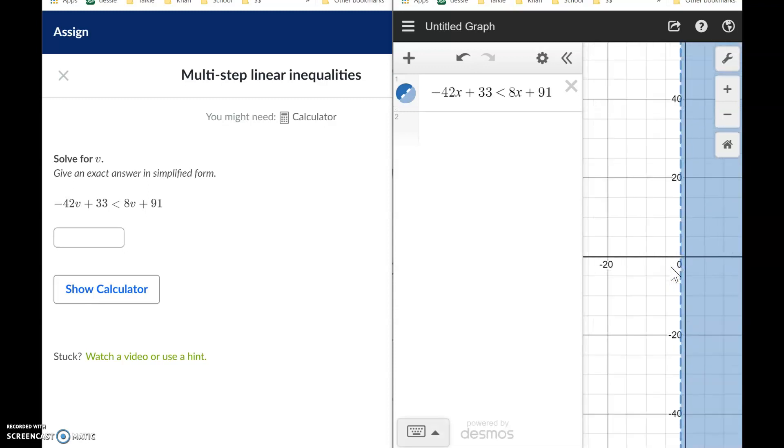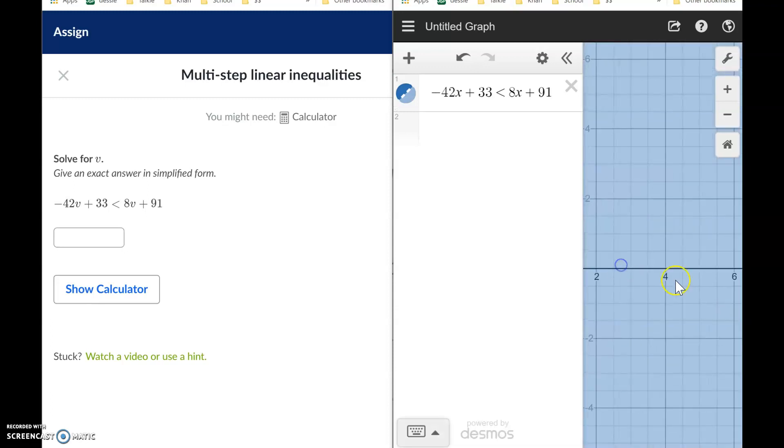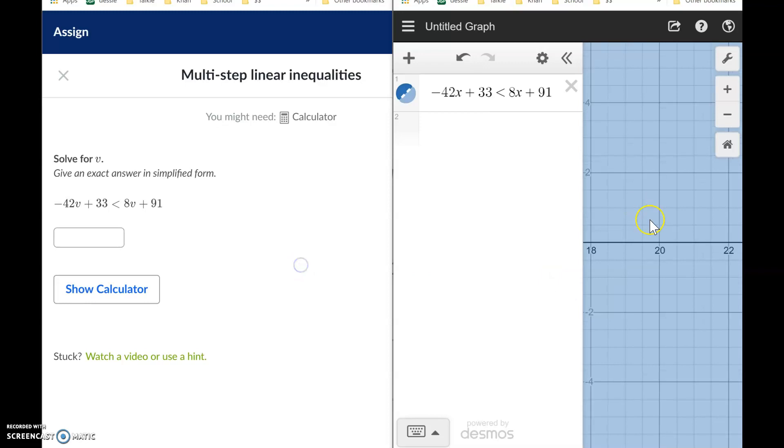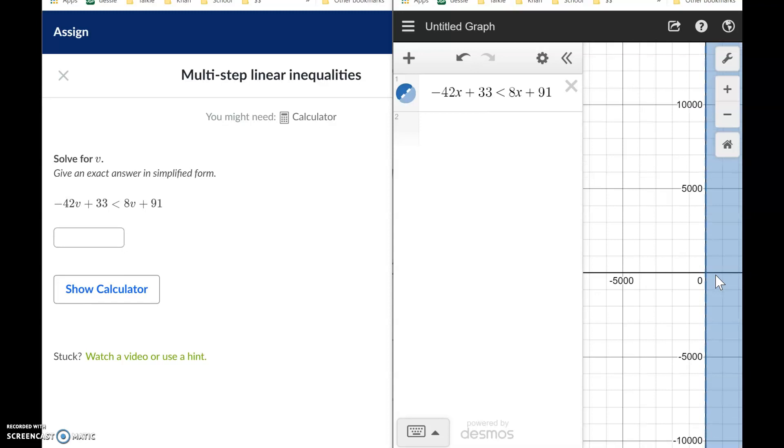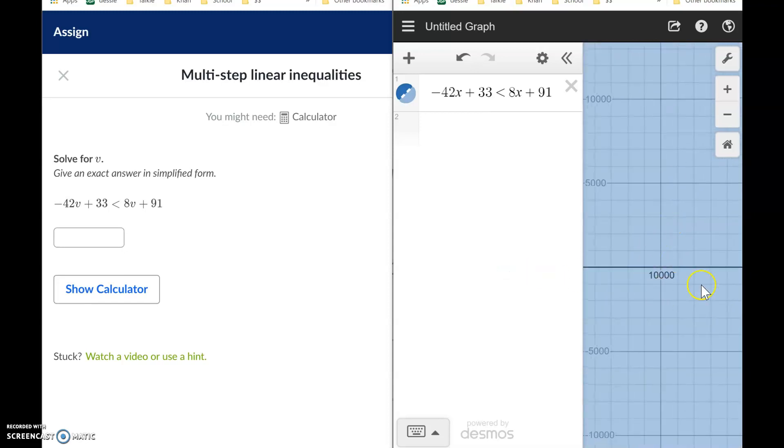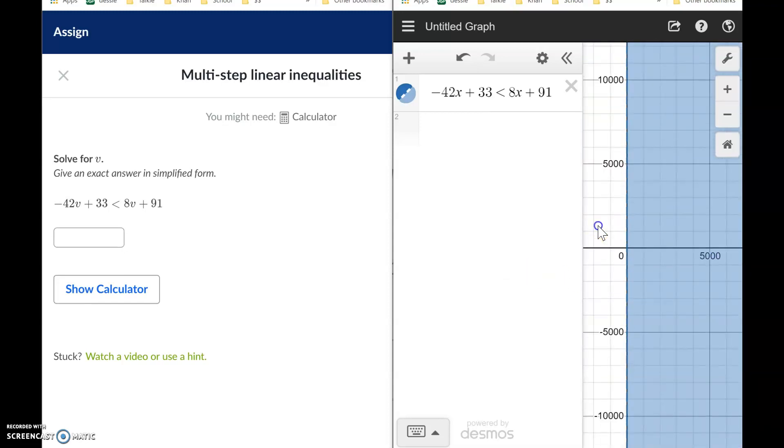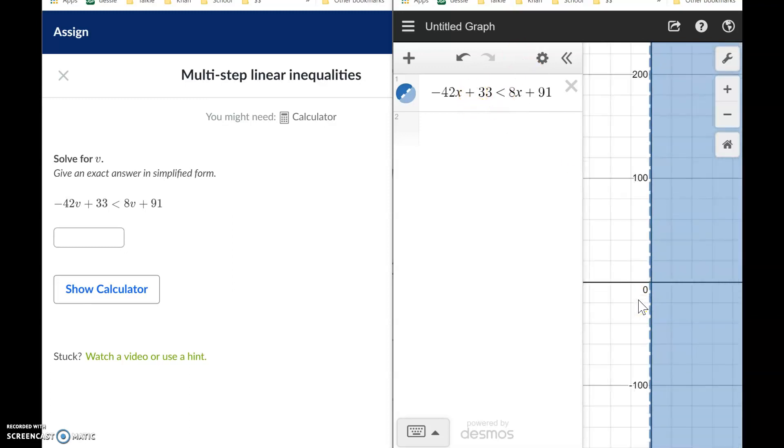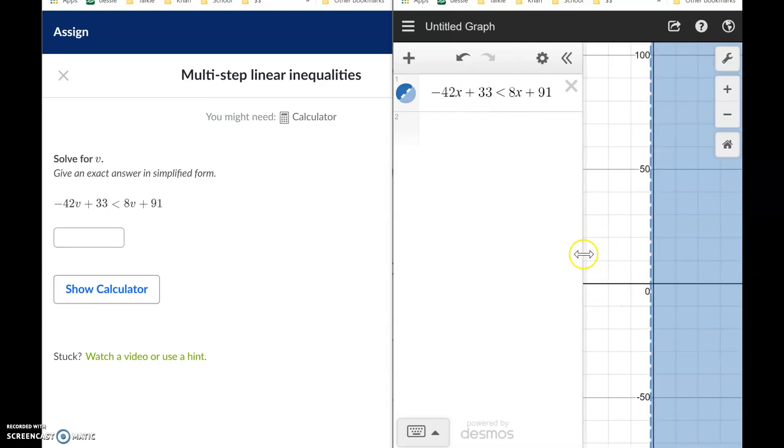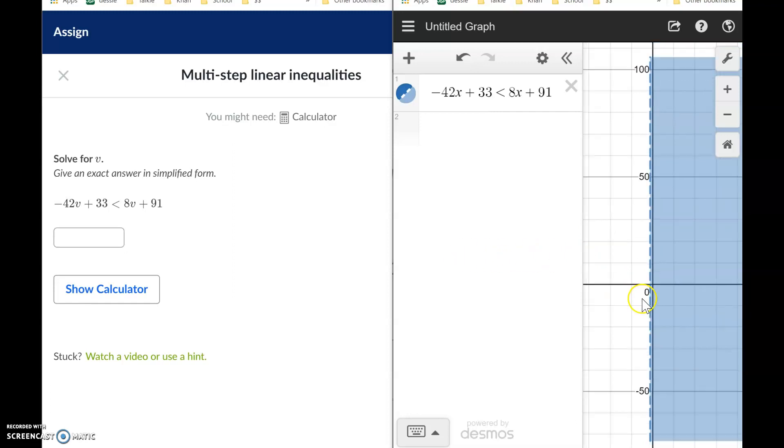Now you see this graph and the shading. What this is saying is all these numbers over here that are shaded - 2, 6, 10, all the way, zooming out, all these huge numbers getting large and in charge - all these numbers in the shaded area are solutions to this inequality. The numbers that aren't, over here on the left, these are numbers that are not solutions.